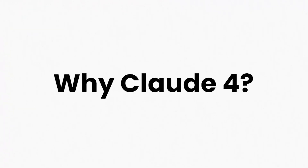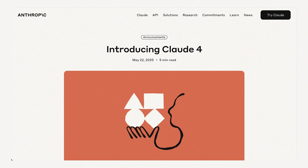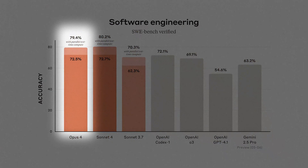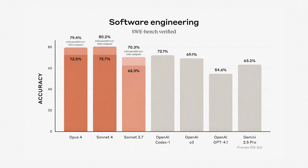So before we jump into the four use cases, why Claude 4? The Claude 4 release includes updates to its Opus 4, Claude Code, Sonnet 4, and more. Opus 4 ranked really high on coding benchmarks — it scored 72.5% on software engineering benchmarks. It also handles deep reasoning and multi-step tasks really well, which makes it a good fit for everything from modeling to agent-like workflows.